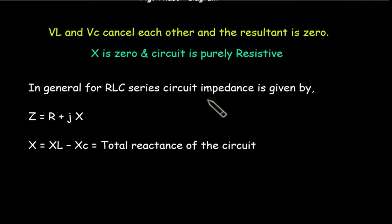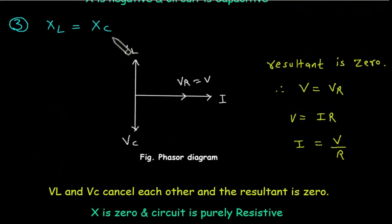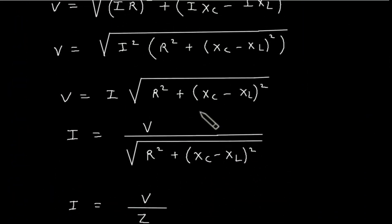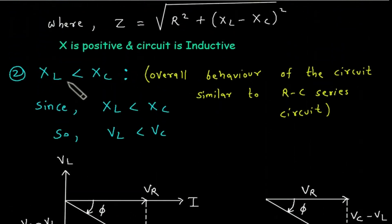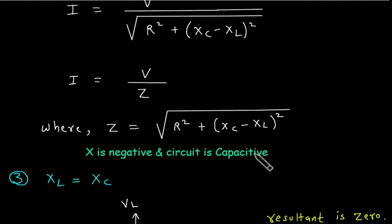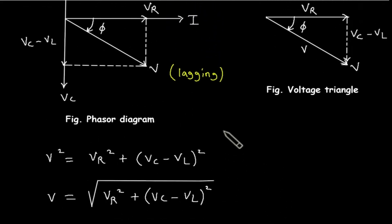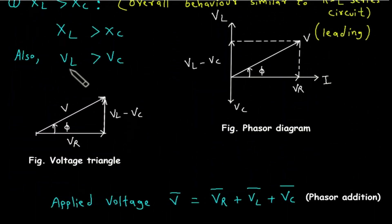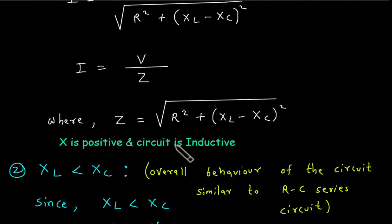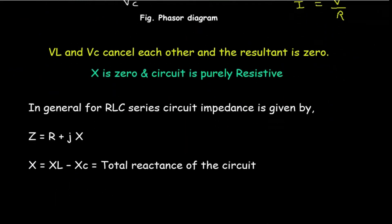In general, for an RLC series circuit, impedance is given by Z = R + Jx, where x = XL minus Xc is the total reactance of the circuit. When XL equals Xc, X is zero and the circuit is purely resistive. When XL is less than Xc, X is negative and the circuit is capacitive. When XL is greater than Xc, X is positive and the circuit is inductive.